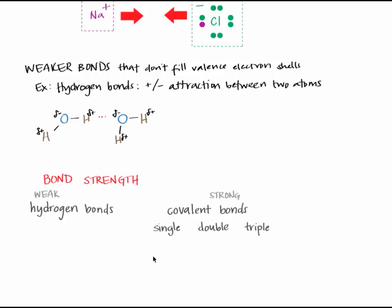Let's finish this tutorial by reviewing bond strength. Hydrogen bonds are weaker than covalent bonds, because hydrogen bonds are simply the attraction between partial charges, whereas the shared electrons of covalent bonds give them their strength. Remember that single covalent bonds are weaker than double, which are weaker than triple. As solids, ionic bonds could be stronger or weaker than covalent bonds depending on the structure. In solution — dissolved in a liquid, as found in the body — ionic bonds have interesting properties that we'll see in the next tutorial.